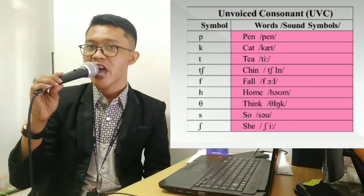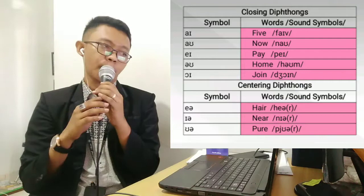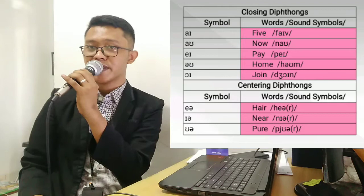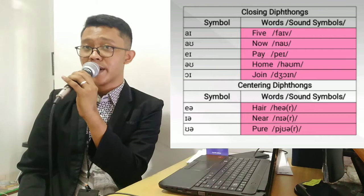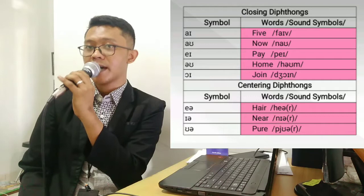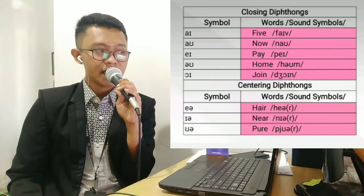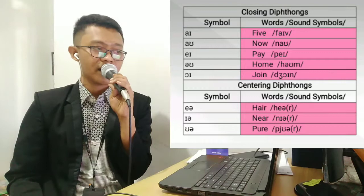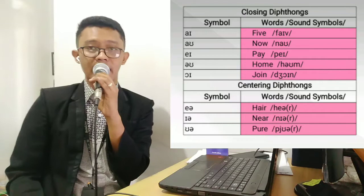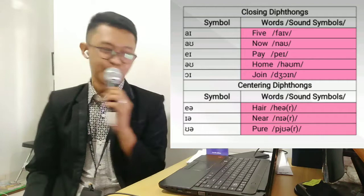Ini tujuannya memberikan contoh cara membaca phonetics transcription atau sound simbol dari beberapa kata yang ditemukan dalam kamus Oxford. Selanjutnya dalam kata 'think' — ada simbol theta, yaitu konsonan yang dibaca dengan gigit lidah lalu ucapkan 'th.' Disusul dengan vowel I legs, lalu konsonan NG dan K. Cara bacanya: 'think, think.' Kemudian closing diphthong, contoh kata 'five' — ada konsonan F tipis, diphthong AI, lalu konsonan V tebal (bibir bawah bergetar). Cara bacanya: 'five, five, five.'